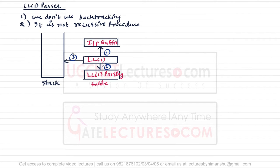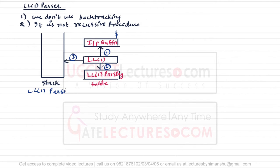Component one is the LL1 parser, component two is the LL1 parsing table, and component three is the input buffer. The LL1 parser takes the help of the parsing table to parse the input it reads from the input buffer. Every string in the input buffer will be ended by a dollar sign.